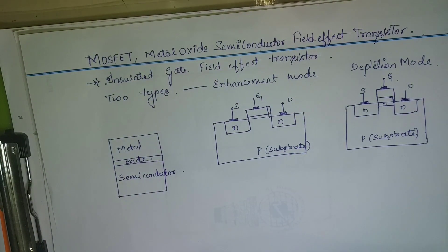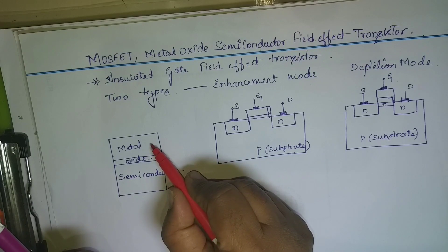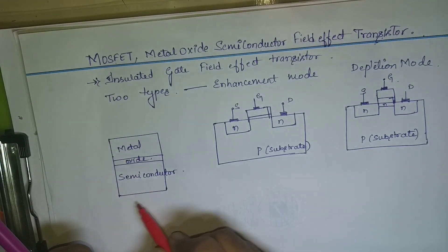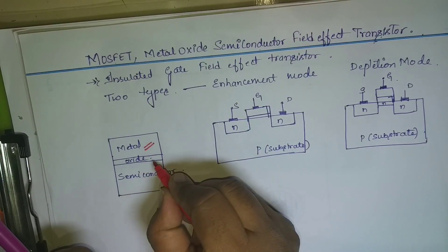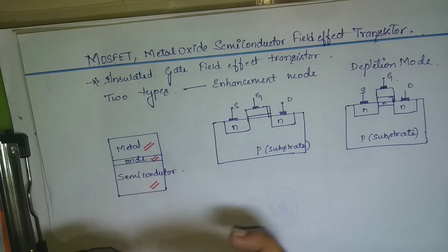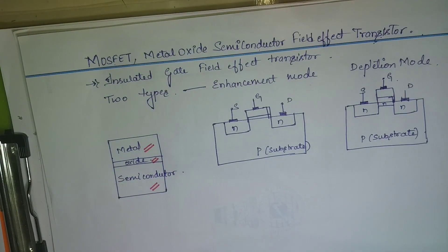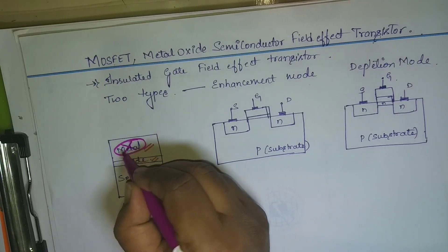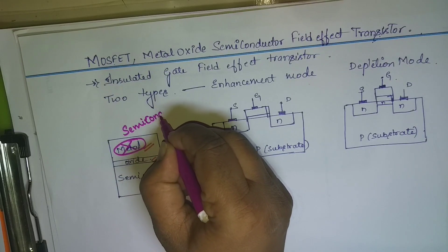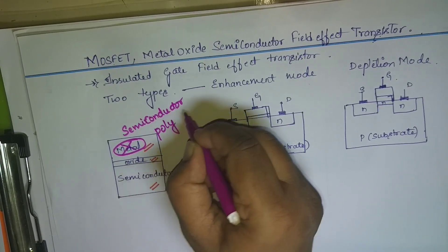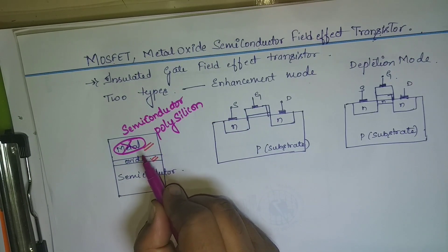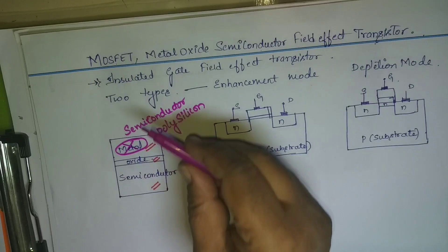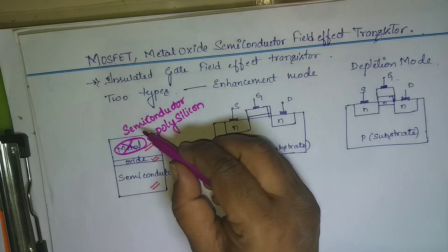Let us see how the physical structure of a MOSFET looks. In the physical structure you have a metal layer, oxide layer, and a semiconducting layer. This was the earlier structure of the Metal Oxide Semiconductor Field Effect Transistor. But nowadays, as electronics have improved, the metal layer is now replaced by a semiconductor layer called polysilicon.